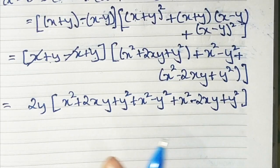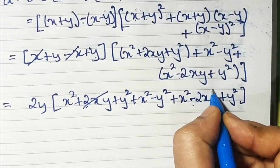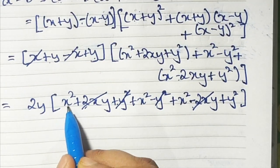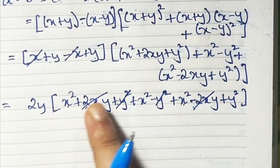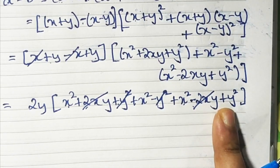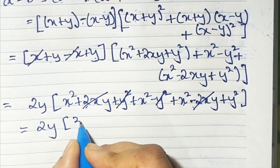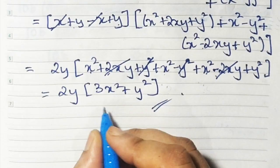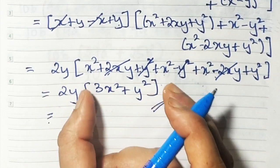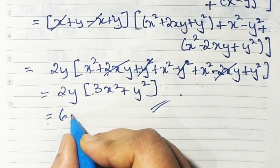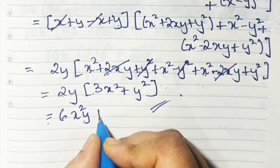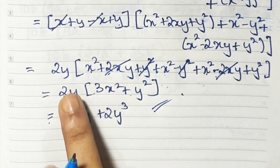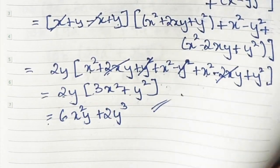Plus 2xy minus 2xy gets cancelled, and plus y square minus y square gets cancelled. What remains: three x squares give 3x square, and the remaining y square gives plus y square. Now multiplying 2y with the bracket: 2y times 3x square gives 6x square y, plus 2y times y square gives 2y cube. So the answer is 6x²y + 2y³.